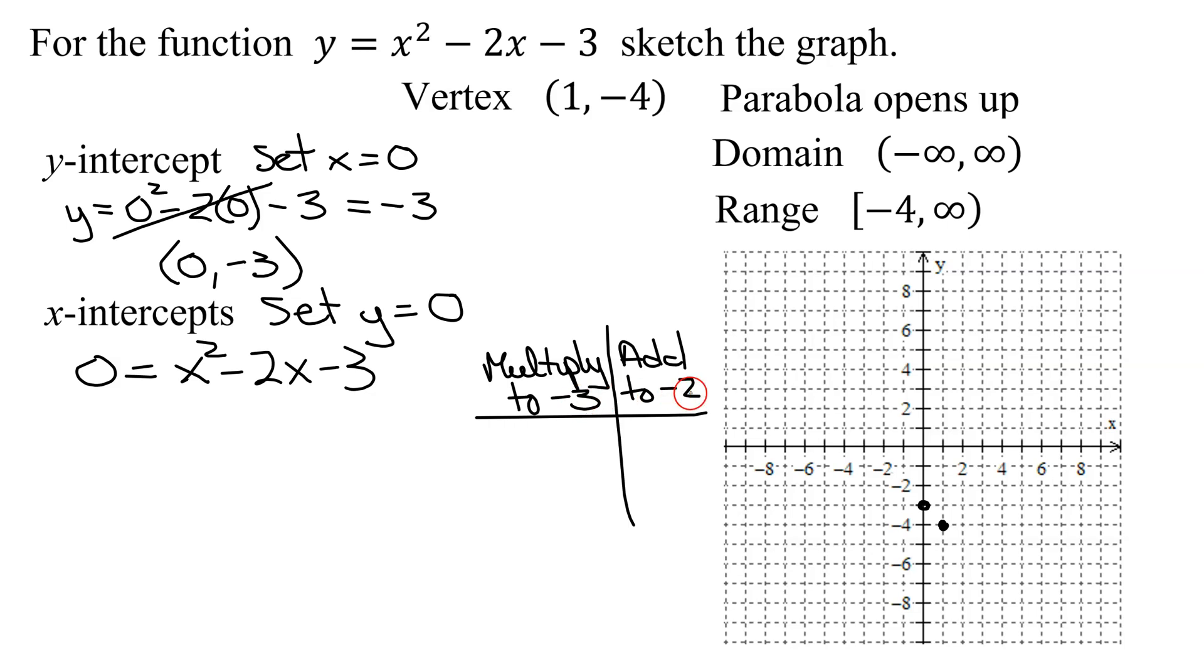Not too many choices. Multiply to a negative, signs are different. Add to a negative, the bigger one has to be the negative one. So 1 times negative 3 is negative 3. And 1 plus negative 3 equals negative 2, which is what I'm looking for. And since a was 1, these are my factors. So I get 0 equals x plus 1 times x minus 3. Set each factor equal to 0. I get x plus 1 equals 0. Subtract 1 from both sides, get x equal to negative 1. Set the other factor equal to 0, x minus 3 equals 0. Add 3 to both sides, x equals 3.